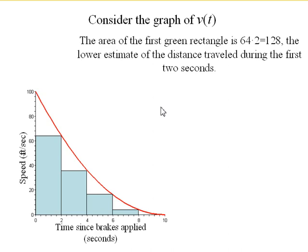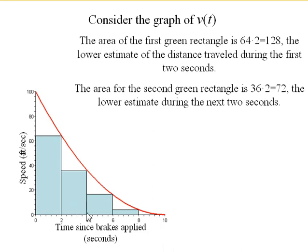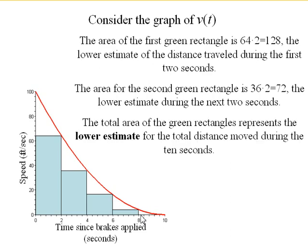The area of this first rectangle is 64 feet per second times the 2 seconds, so 64 times 2. The area of this next rectangle is 36 times 2. So on and so forth. And then you can't see the rectangle here because, remember, this last one had a height of 0. But there's a fifth rectangle here. It just happens to have an area of 0. So these five rectangles give us the lower estimate that we calculated earlier, and they're known as the right-hand sums.